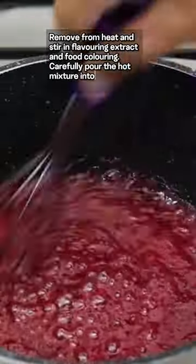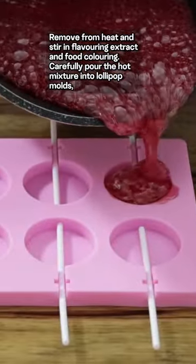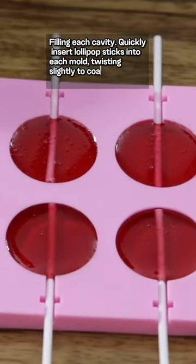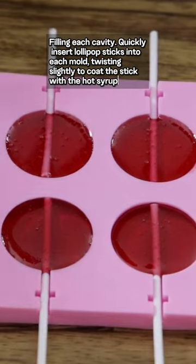Carefully pour the hot mixture into lollipop molds, filling each cavity. Quickly insert lollipop sticks into each mold, twisting slightly to coat the stick with the hot syrup.